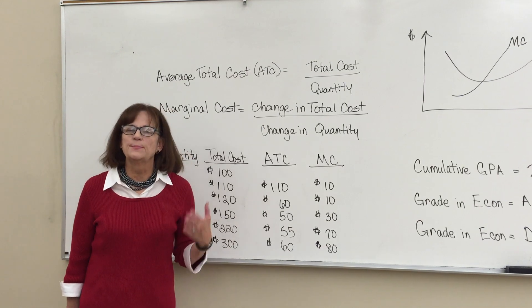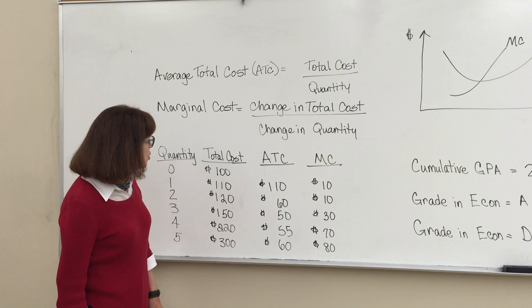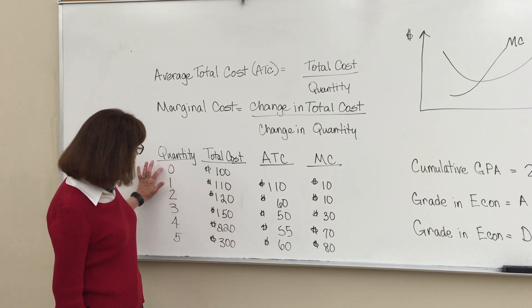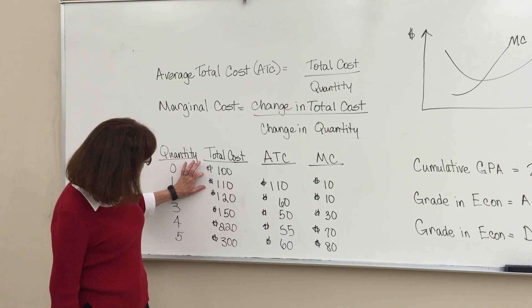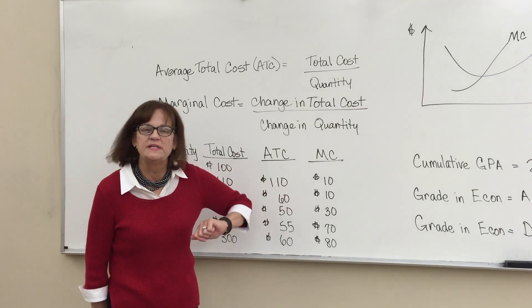But the marginal cost is completely different. It is the change in your total cost. So when you go from producing nothing to one unit, your total cost went up by only $10. So the marginal cost of the first unit was only $10.